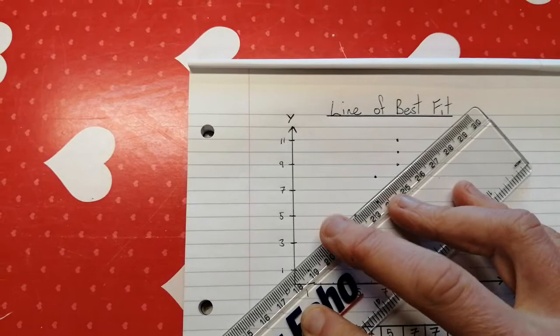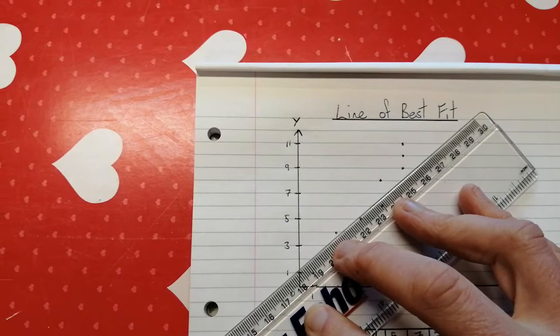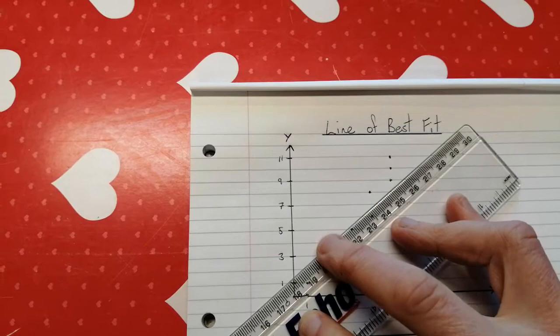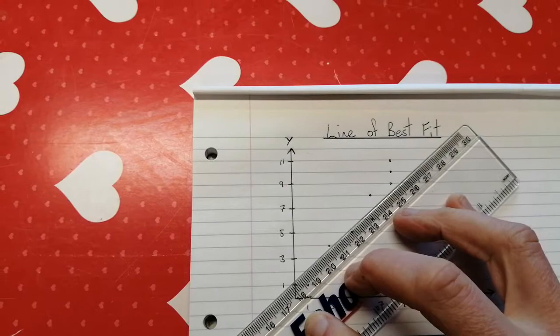If I choose this dot here for the one that I want to be on the line, then I move my ruler just slightly in this way. And now when I drew my line, my line will go through that dot and it would have these one, two, three, four dots up here on one side and four on the other side. And this dot here would be on the line and that would be perfectly fine.